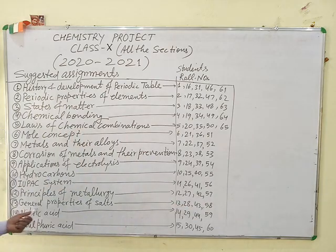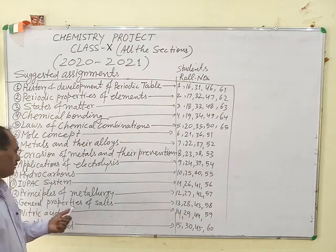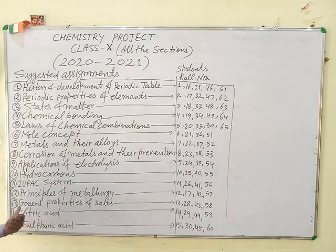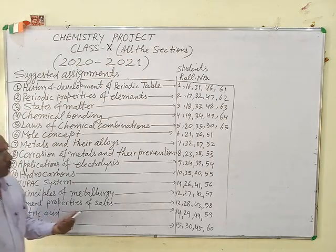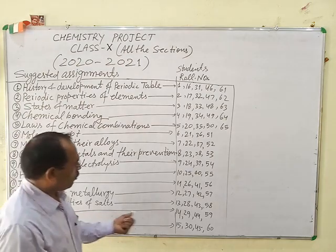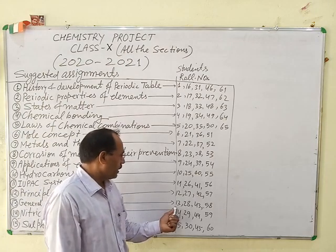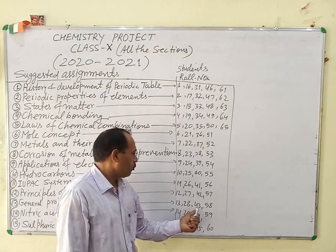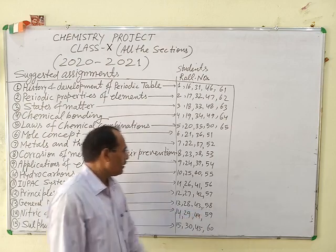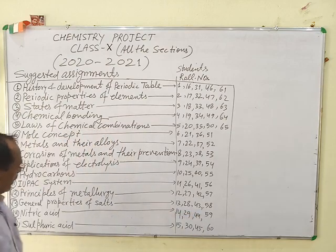General properties of salts for roll numbers 13, 28, 43 and 58.